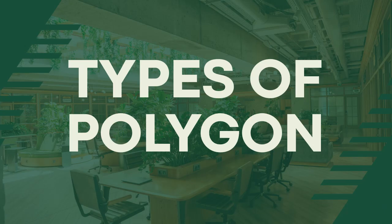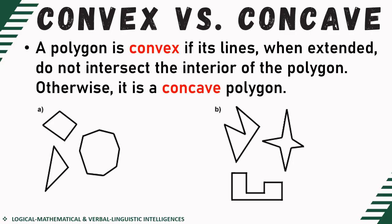Now let's proceed with types of polygon. First, convex versus concave. A polygon is convex if its lines, when extended, do not intersect the interior of the polygon. Otherwise, it is considered as concave.